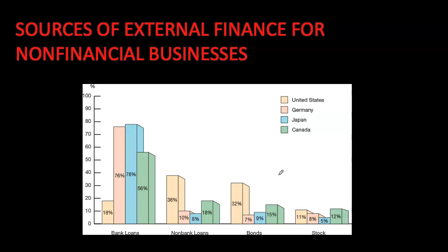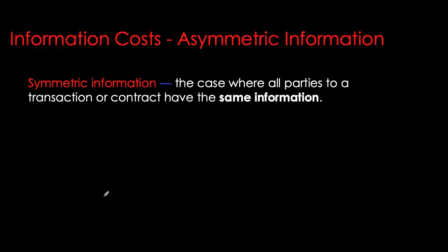Mishkin also points out that within debt contracts, both collateral and restrictive covenants play a huge role. Today we're going to analyze these facts and see where they are coming from and what can be the economic rationale behind them. My main purpose today is to focus on asymmetric information problems. We touched upon them in one of our earlier chapters; however, today we're going to look at why external financing through financial intermediaries — banks and non-bank loans — plays such a huge important role.